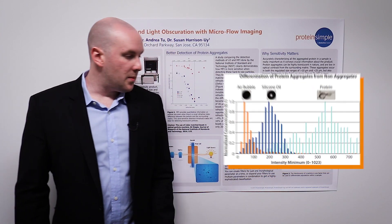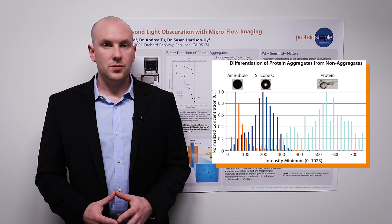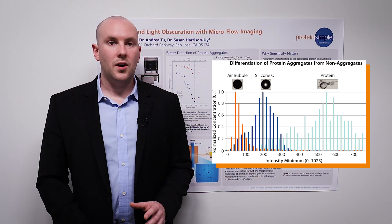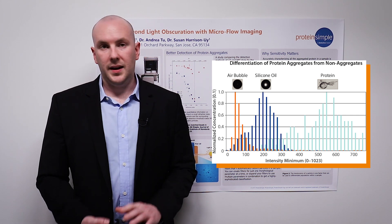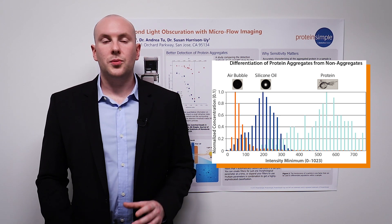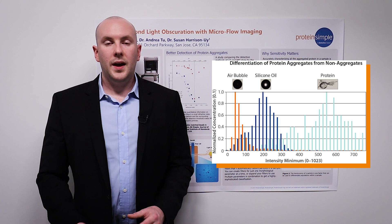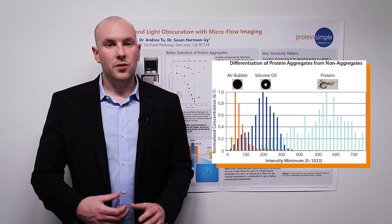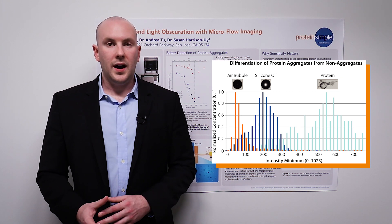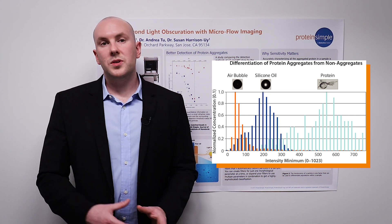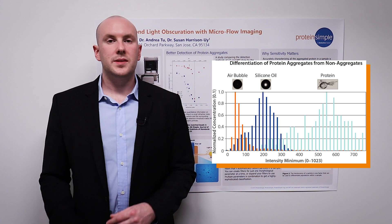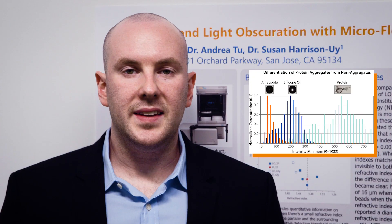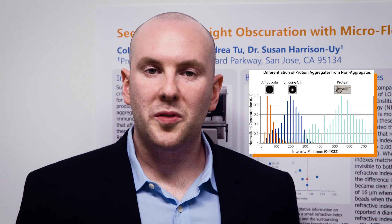In this chart, we have an example of how one morphological parameter can be used to see differences between three different particle populations: protein aggregates, silicon oil drops, and air bubbles. The morphological parameter being leveraged is the intensity minimum, which is a measurement of how translucent or opaque a particle is. The protein aggregate, which is highly translucent with a lot of light transmitting through it, scores very high for intensity minimum. The silicon oil drop, with its dark outline and bright center, has a slightly lower score. And the highly opaque air bubble scores very low for intensity minimum.